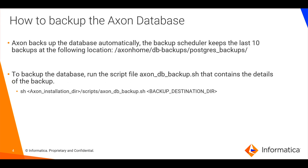Axon automatically takes the backup. The last 10 backups can be found at Axon Home DB Backup and under the Postgres Backup Directory. To take the backup manually, we need to run the Axon DB Backup.sh file under the script directory of the Axon Installation Directory.